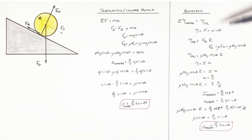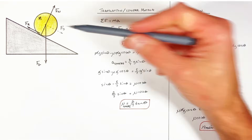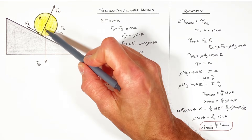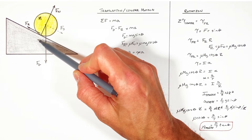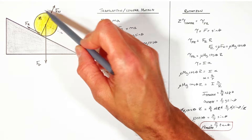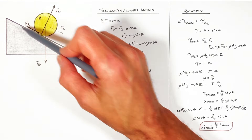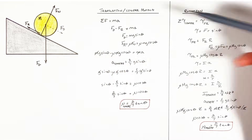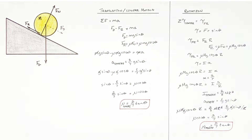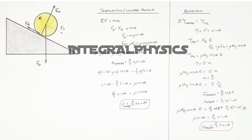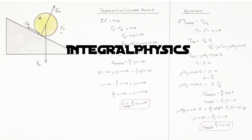So these have been the two ways to solve for the required coefficient of static friction between a rolling object and a hill such that it will roll without slipping. I hope you found this useful — that's all for now.